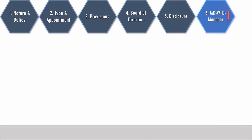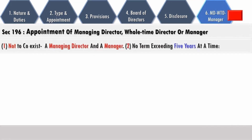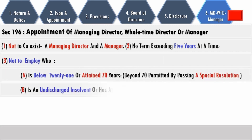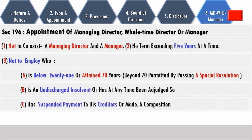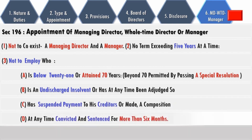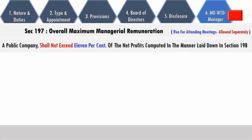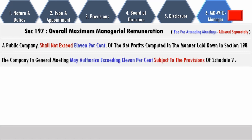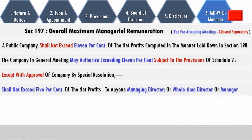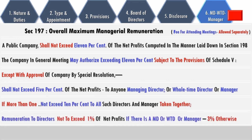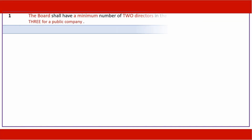Guidelines in respect of appointment of managing director, manager, or whole-time director: there cannot be coexistence of a managing director and a manager; term not to exceed five years at a time; not to employ one who is below 21 years or has attained 70 years (beyond 70 permitted by passing a special resolution); who is an undischarged insolvent or has at any time been adjudged so, or has suspended payment to creditors, made a composition, or at any time been convicted and sentenced for more than six months. Under Section 197, ceiling on managerial remuneration: a public company shall not exceed 11% of net profits under Section 198. The company in a general meeting may authorize exceeding 11% subject to provisions of Schedule 5. Except with approval by special resolution, remuneration shall not exceed 5% of net profits to any one of the managing director, whole-time director, or manager; if more than one, not to exceed 10% to all such directors and managers taken together. Remuneration to directors shall not exceed 1% of net profits if there is an MD, WTD, or manager, and 3% otherwise.